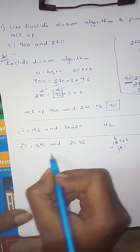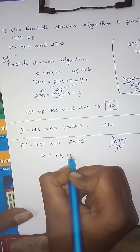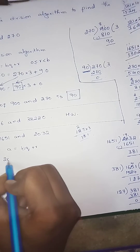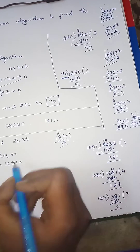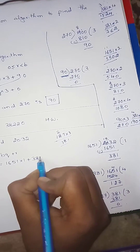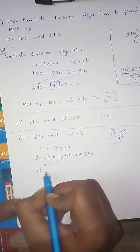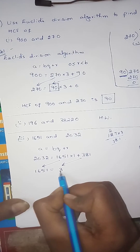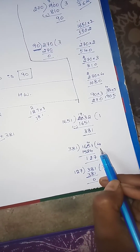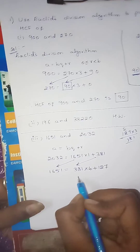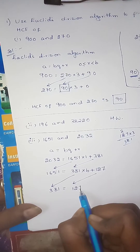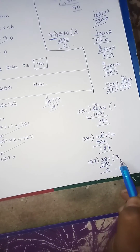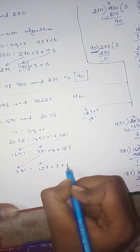We will now write using the Euclid division algorithm formally. A equals BQ plus R. First: dividend 2032 equals divisor 1651 into quotient 1 plus remainder 381. Next case: 1651 equals 381 into quotient 4 plus 127. Next: 381 equals 127 into quotient 3 plus remainder 0. Remainder is 0.